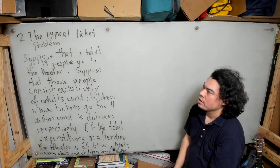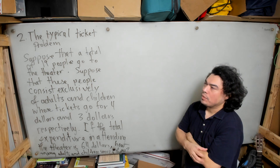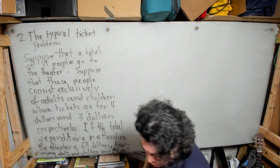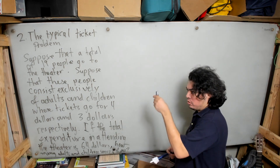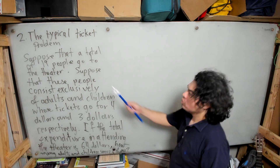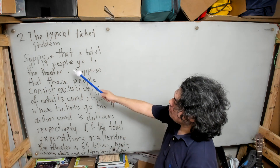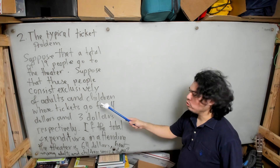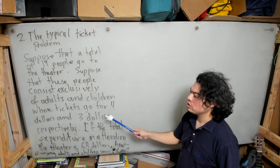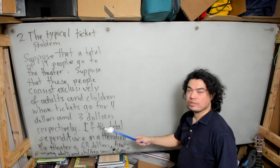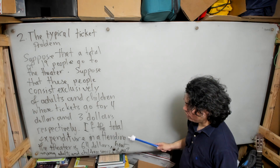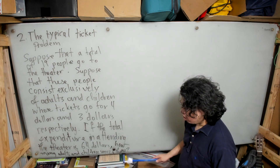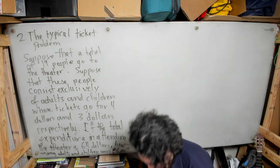Here we have the typical ticket problem. Suppose that a total of 19 people go to the theater, consisting exclusively of adults and children whose tickets go for four dollars and three dollars respectively. If the total expenditure in attending the theater is $64, how many adults and how many children were there?